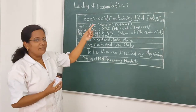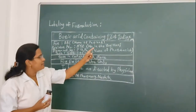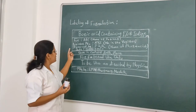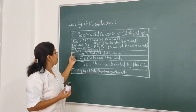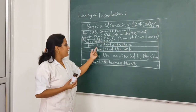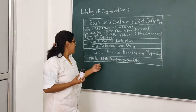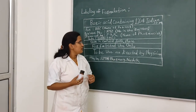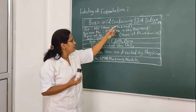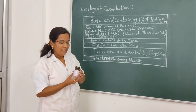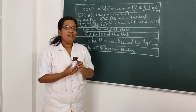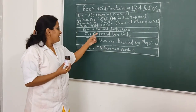We will move towards labeling of the formulation. Label: Boric acid containing 1% of iodine, 10 grams. For: [patient name ADC]. Register number: XYZ. Dispensed by: PQR [name of pharmacist]. Manufacture date: September 2020. Storage conditions: store in a cool and dark place. For external use only. To be used as directed by physician. Manufactured by: LMN from [location]. Result: 10 grams of boric acid containing 1% of iodine is submitted in this amber-colored glass bottle. Special instruction on label: for external use only.